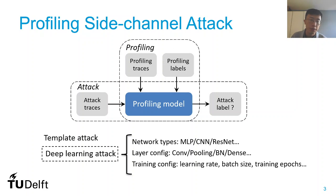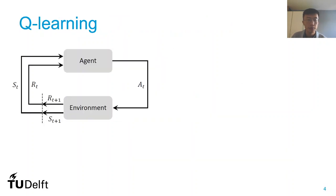The goal of this paper is to automate and simplify this process, so that the attacker and evaluator can use our methodology to apply our attack to different datasets. We use reinforcement learning — more specifically, Q-learning.